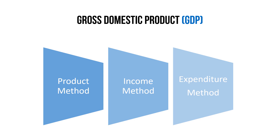This production is distributed among the four factors of production: land, labour, capital, and entrepreneurship. Land earns rent, labour earns salaries and wages, capital earns interest, and entrepreneurship earns profit. So the total income earned from all factors of production, when summed up, gives us GDP. The third method is the expenditure method — during an accounting year, if we sum up all expenditures in the country, we get GDP.